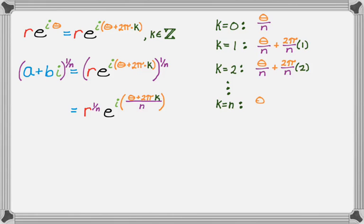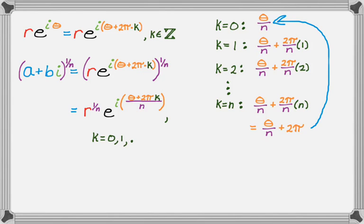So when we get to k is equal to n, the formula looks like this. So it's 2 pi over n times n, but you'll notice that cancels out. So that's really the same as just theta over n plus 2 pi. But theta over n plus 2 pi is actually just coterminal to the original. So if we go all the way to n, we just start duplicating roots. And every complex number has n nth roots. So if we go from 0 to n minus 1, that'll give us the n nth roots that we're looking for. So the values of k we can have are 0, 1, all the way up to n minus 1.